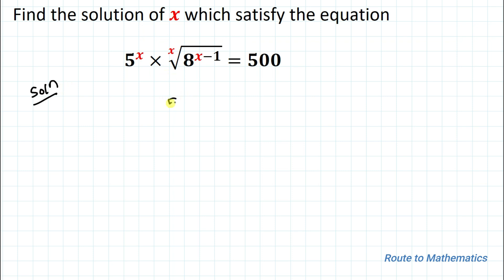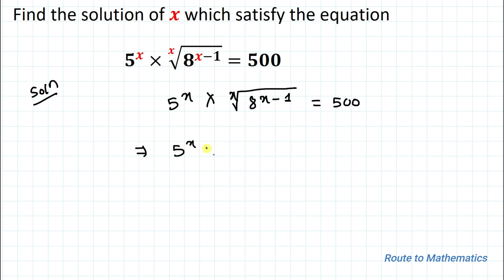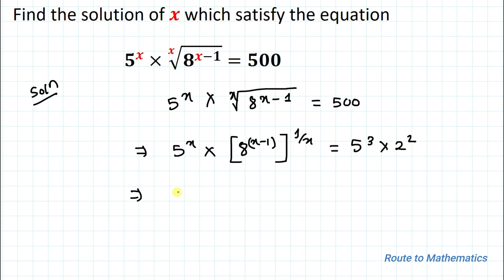We have the equation: 5 to the power x, multiplied with the x-th root of 8 to the power x minus 1, equals 500. In the next step, we can write 5 to the power x multiplied with 8 to the power x minus 1, whole to the power 1 by x, equals to 500. If we prime factorize 500, we will get 5 to the power 3 multiplied with 2 to the power 2.